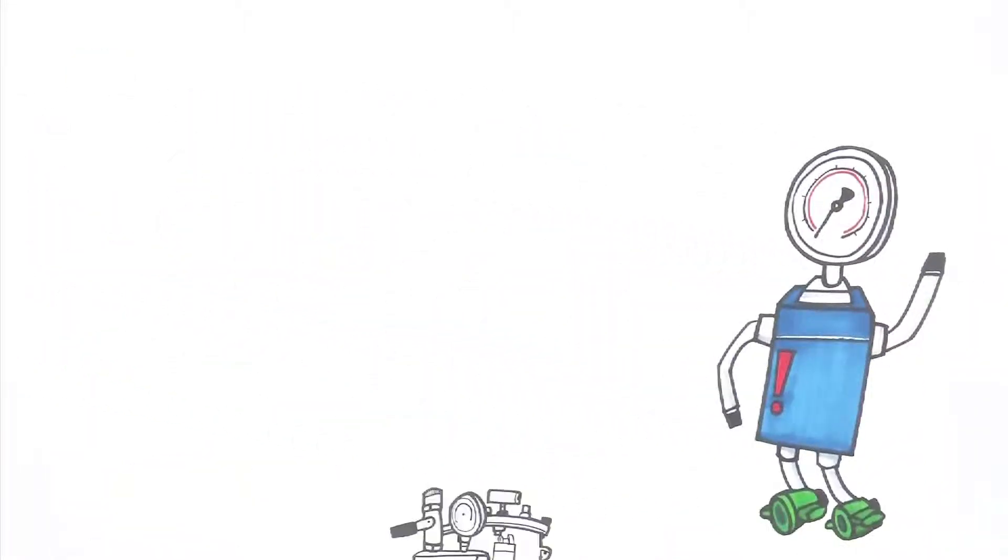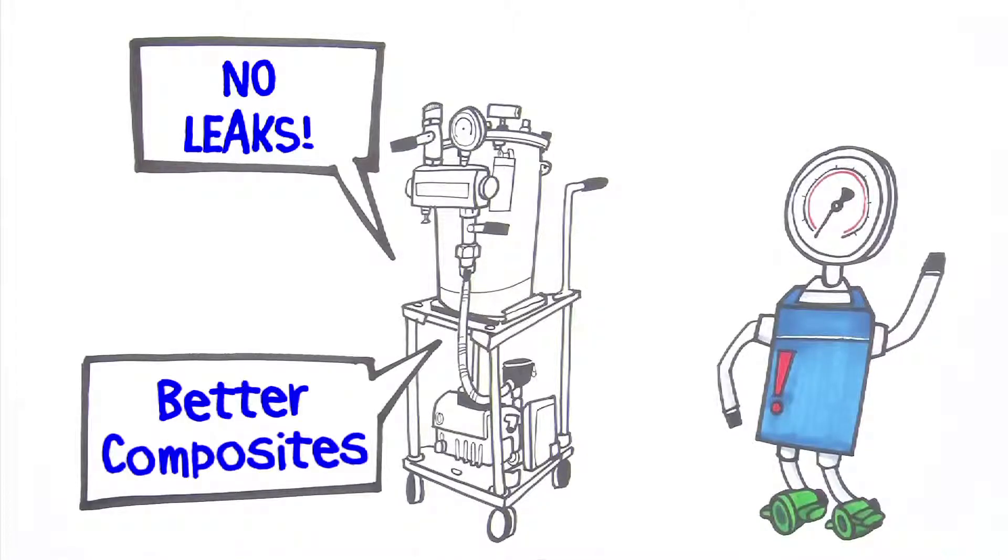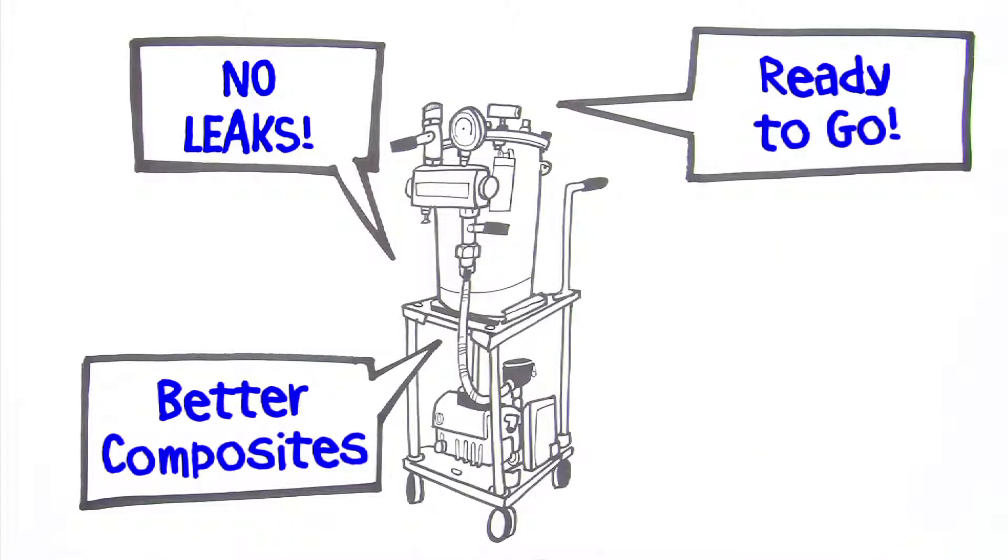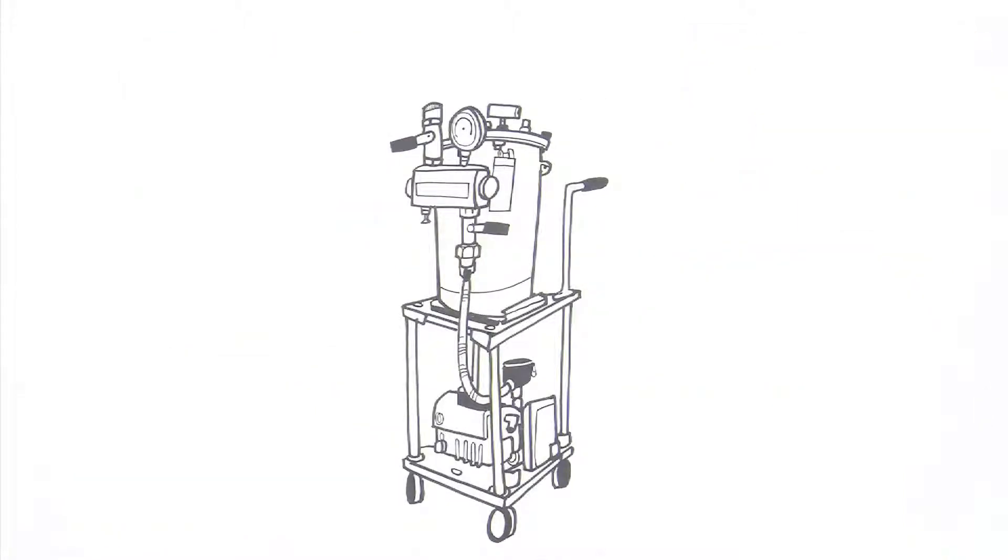Enter Vacman from Vacmobiles. Vacmobiles don't leak, which means a better solution for making composites. Vacmobiles are ready to go, out of the box. They've been proven in over 60 countries. Never a mishmash of parts culled from wherever.